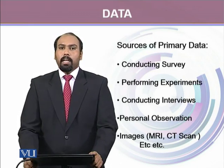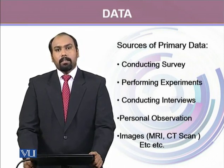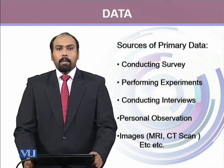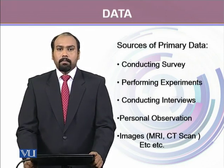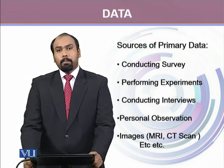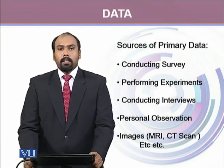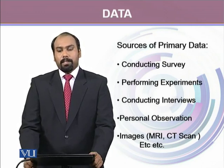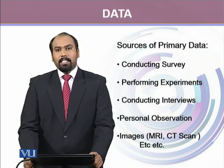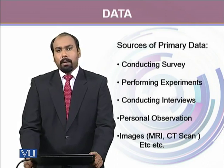Primary data can be obtained from multiple different sources. We can conduct surveys to obtain first-hand information, perform experiments, conduct interviews, or make personal observations. Nowadays it is also very common for data to be in the form of images, like results from MRI or CT scans. There are many other ways to collect primary data.